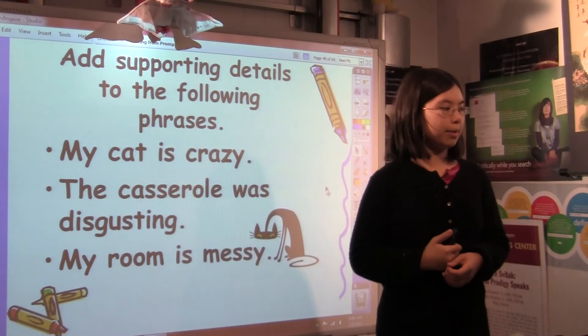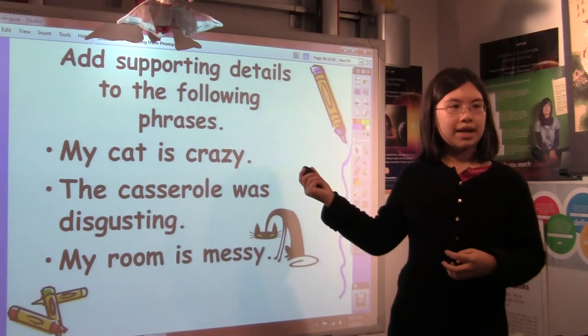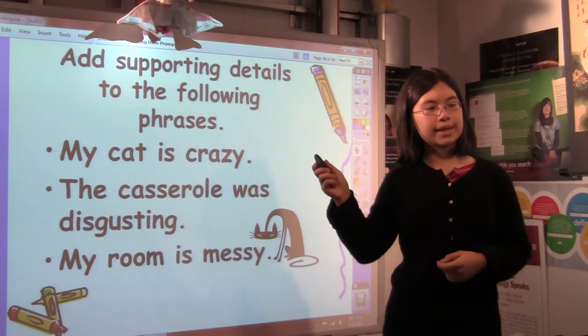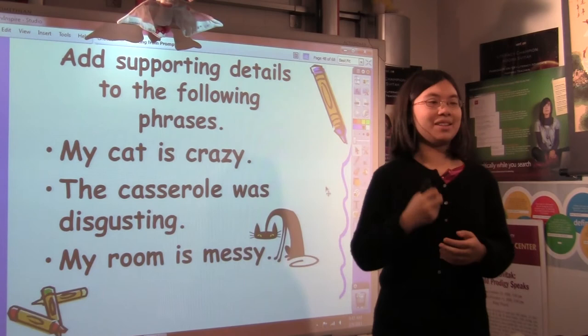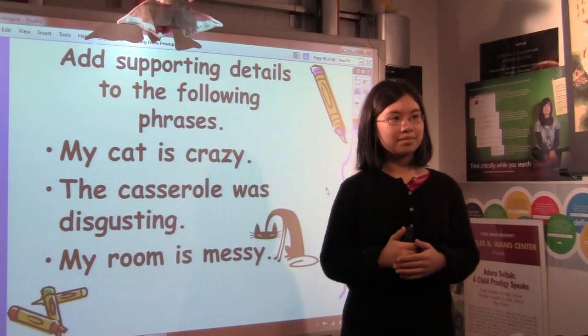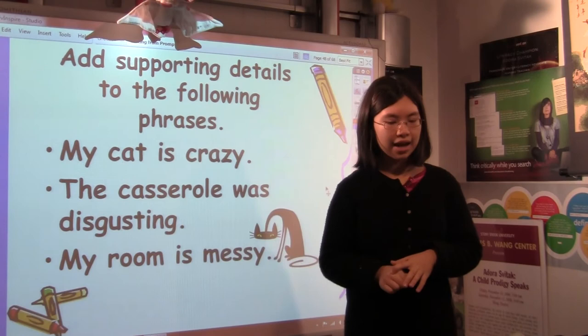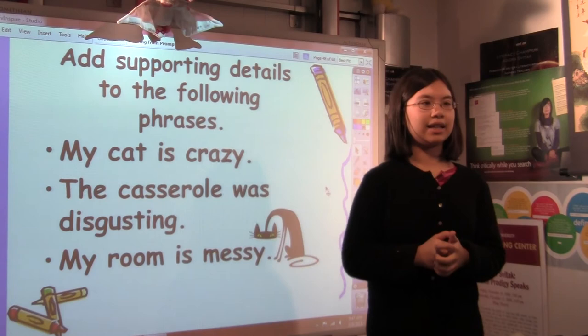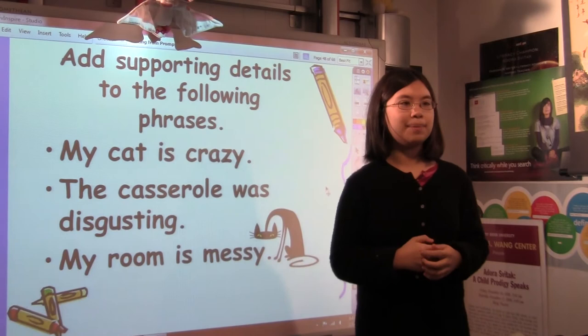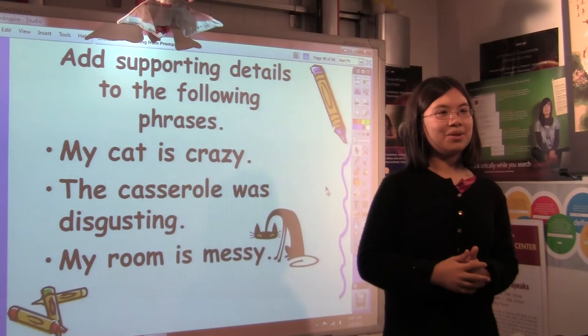So, let's do a collaborative writing activity. Add supporting details to the following phrases. My cat is crazy, the casserole is disgusting, or my room is messy. So, raise your hand if you think we should describe the crazy cat. Okay. Claire, how are you doing it? Oh, sorry. I'm out. My cat was ripping up everything and running around the house. Very good. So, when I was saying just my cat was crazy, my cat is crazy, you would say, my crazy cat is ripping everything to shreds, leaving all these tatters of cloth all over the floor. She runs around the house and hisses at anybody and anything. She even spent a whole hour hissing at her own reflection in the mirror.